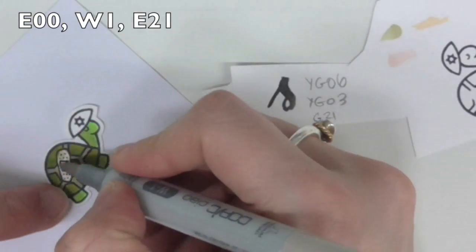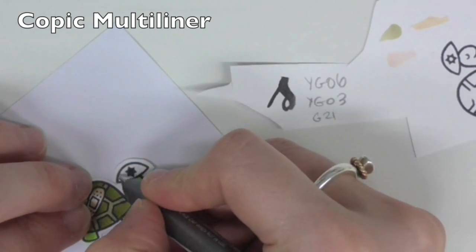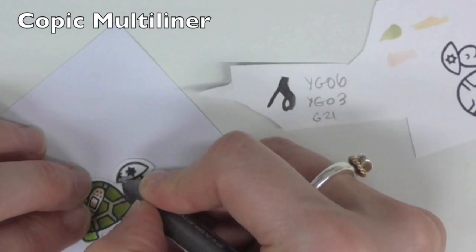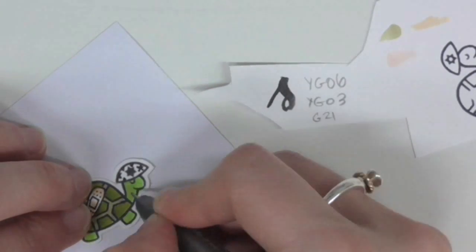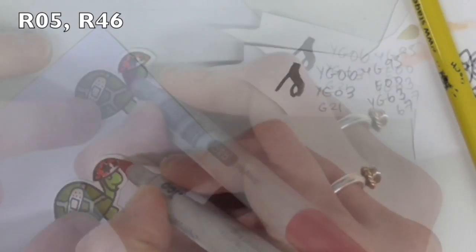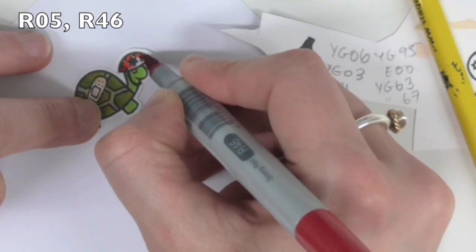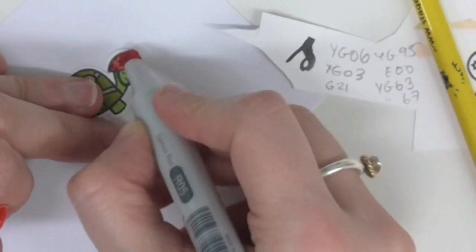For the band-aid I'm using some E00 and E21, and then for his helmet I wanted to add a few more stars. It kind of looks like a crash helmet or a bike helmet now, and obviously a little chin strap as well. And I'll just use some of my R05 and R46 markers to bring in some red tones.